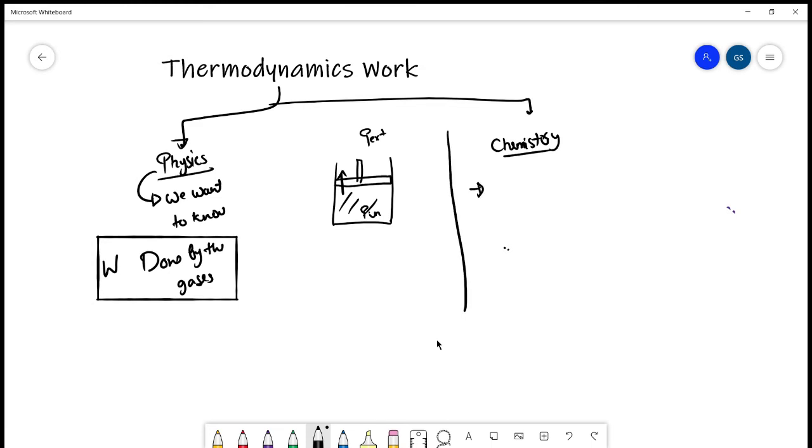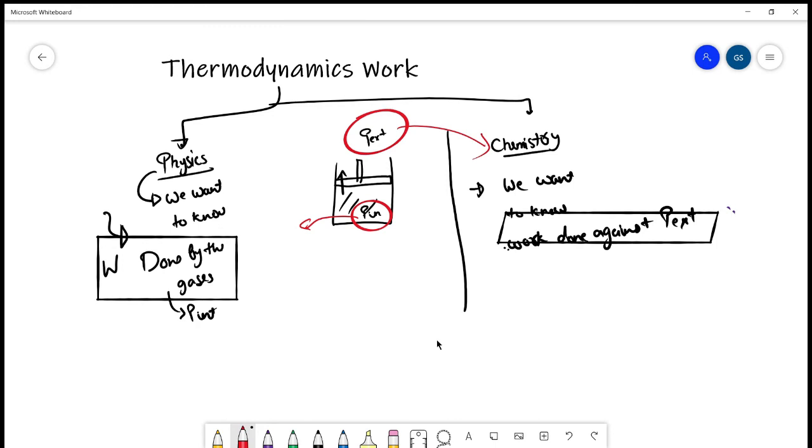In chemistry, what we always see is we want to know work done against P external. You can go and check the textbooks as well. In chemistry, it is generally written that we want to know work done against some external pressure. In physics, it is written as work done by the gases, that is work done by internal pressure. That's the basic difference. In physics, the reference is internal pressure, whereas in chemistry, the reference is external pressure. That's why we come up with a negative sign here and a positive sign here.